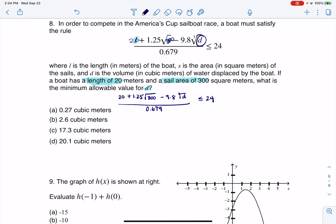Okay, so there's a bunch of ways I could go after this, but the first thing I'm going to do, I want to get rid of the fractions. So I'm going to multiply both sides by 0.679. And that's going to cancel here. So I'm going to have now 20 plus 1.25 times the square root of 300 minus 9.8 times the cube root of D will be less than or equal to, and I'll get my calculator out, and that will give me 16.30.